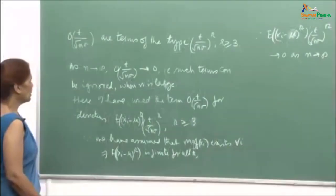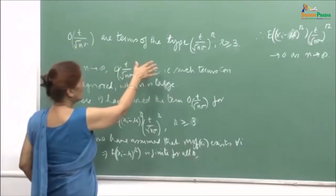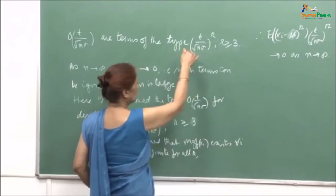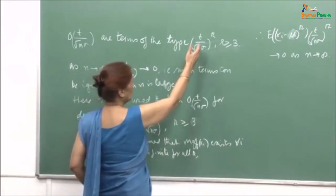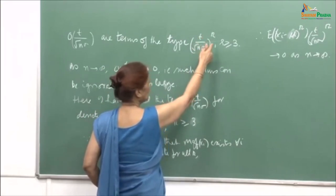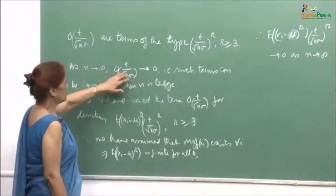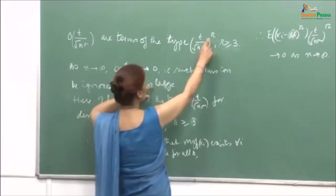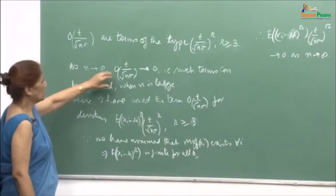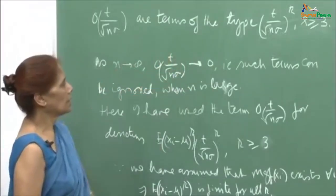In the proof I used the expression 'small o of t/(σ√n)', which denotes terms of the type [t/(σ√n)]^r for r ≥ 3. As n becomes larger, since r ≥ 3, these terms go to 0. So for large n their contribution is negligible and we can neglect them. Also, since the MGF of xᵢ exists, all moments are finite, so E[(xᵢ − μ)^r] is finite for all r, confirming these terms vanish.